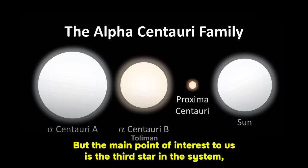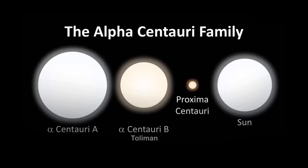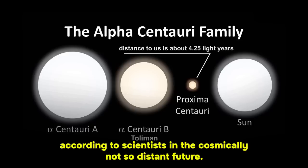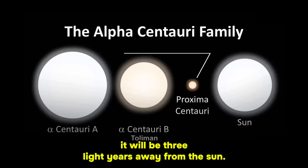But the main point of interest to us is the third star in the system, Proxima Centauri. As the name suggests, this one is the closest to the solar system. Right now, its distance to us is about 4.25 light years. According to scientists, in the cosmically not-so-distant future, in about 267,000 years, it will be three light years away from the Sun.